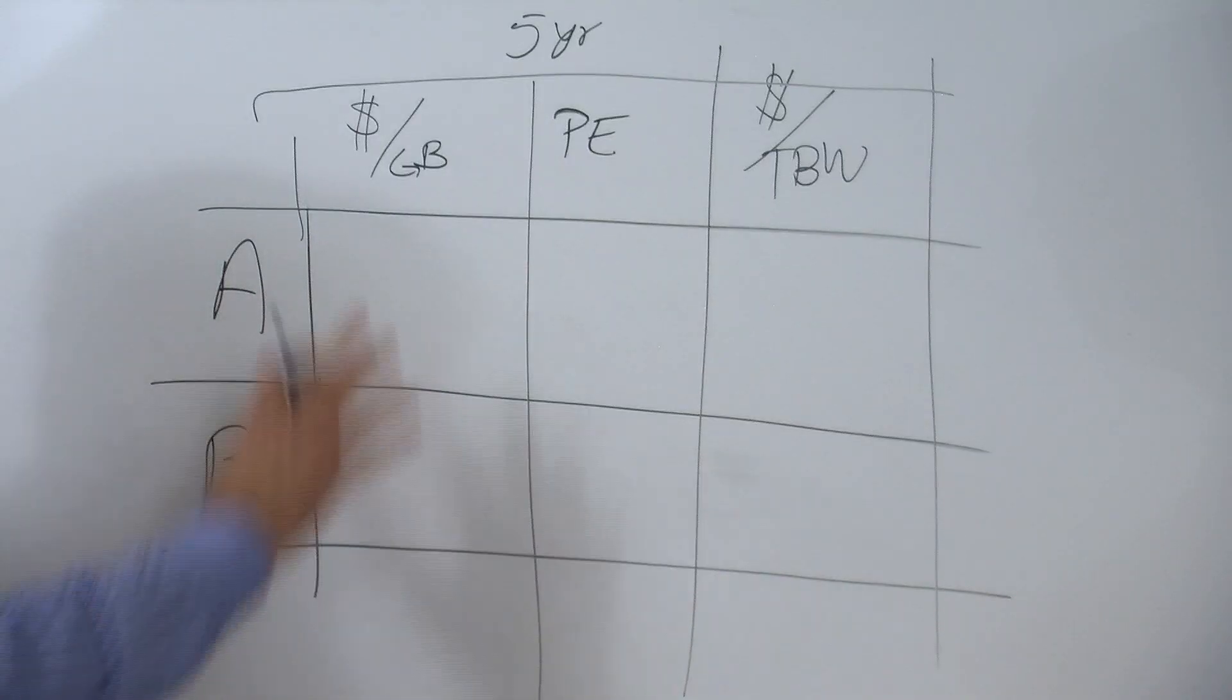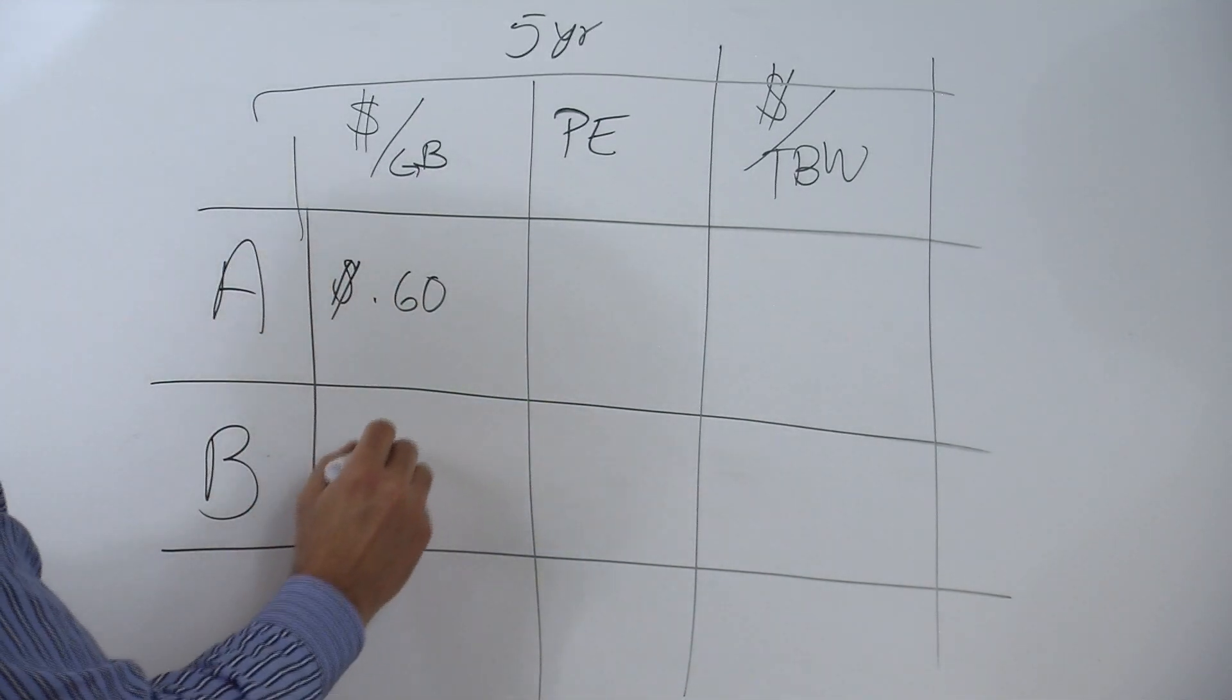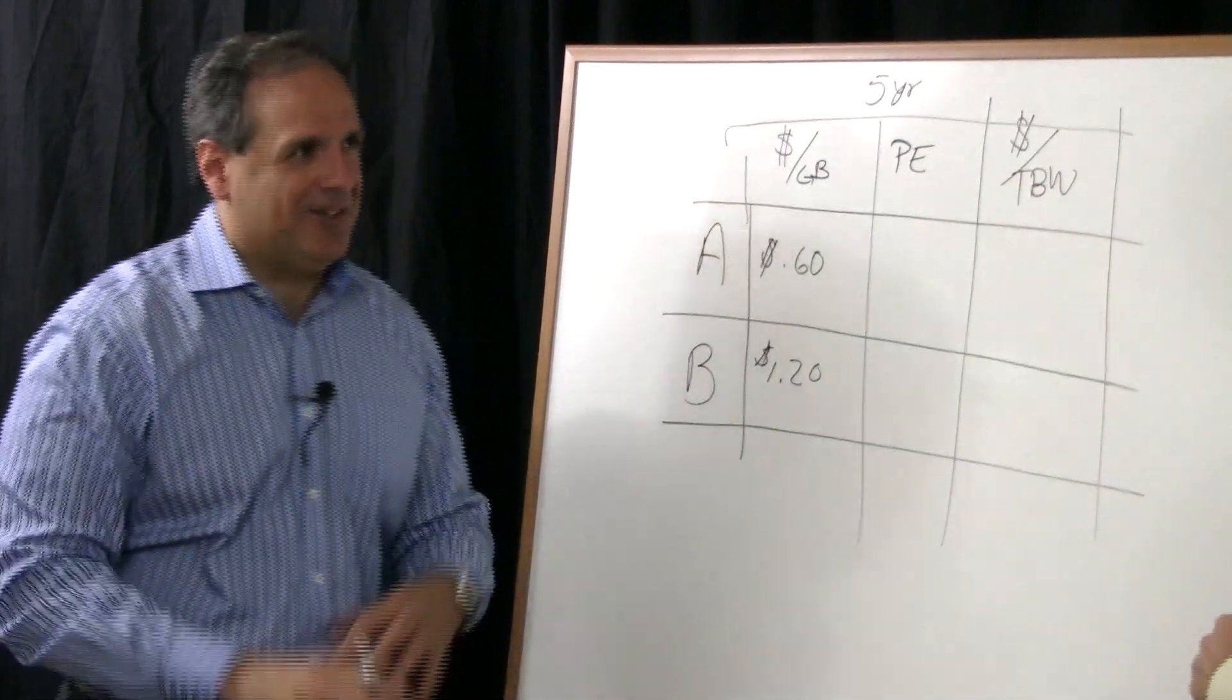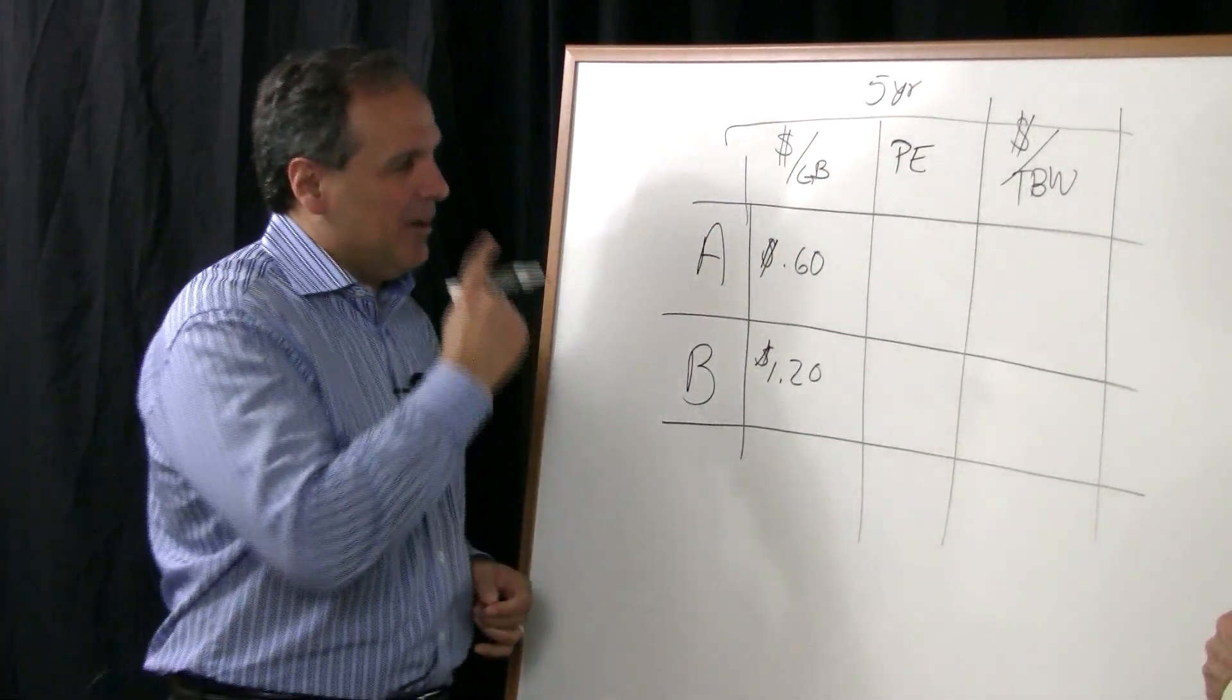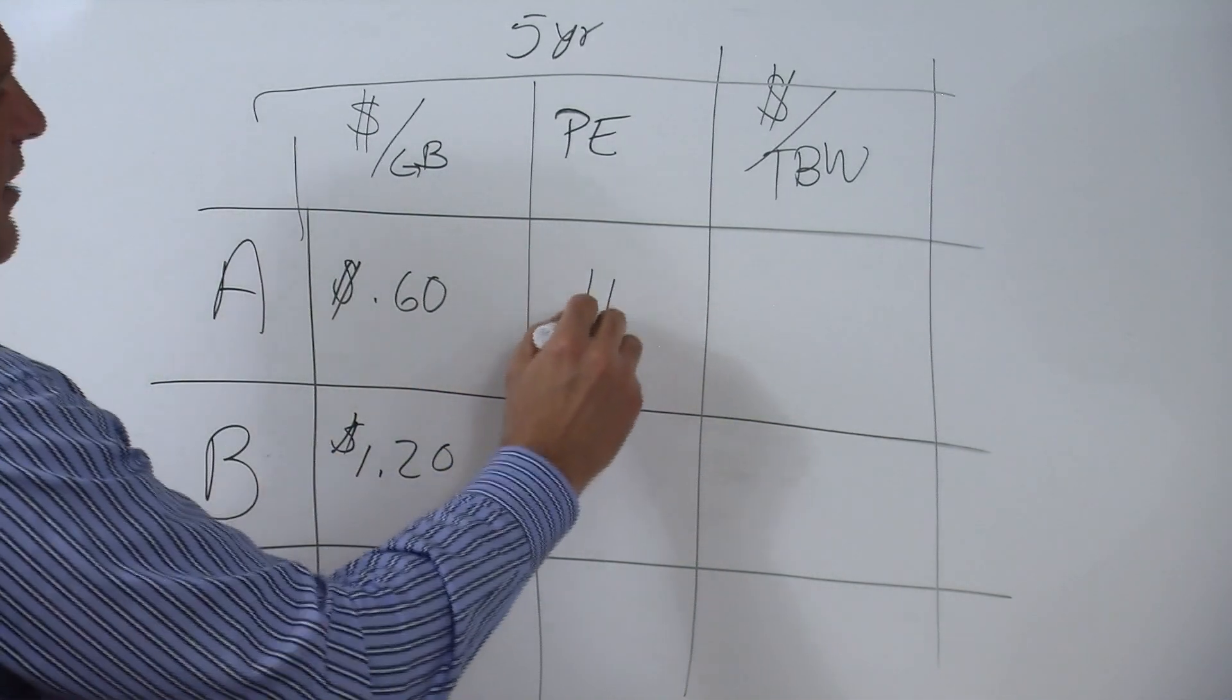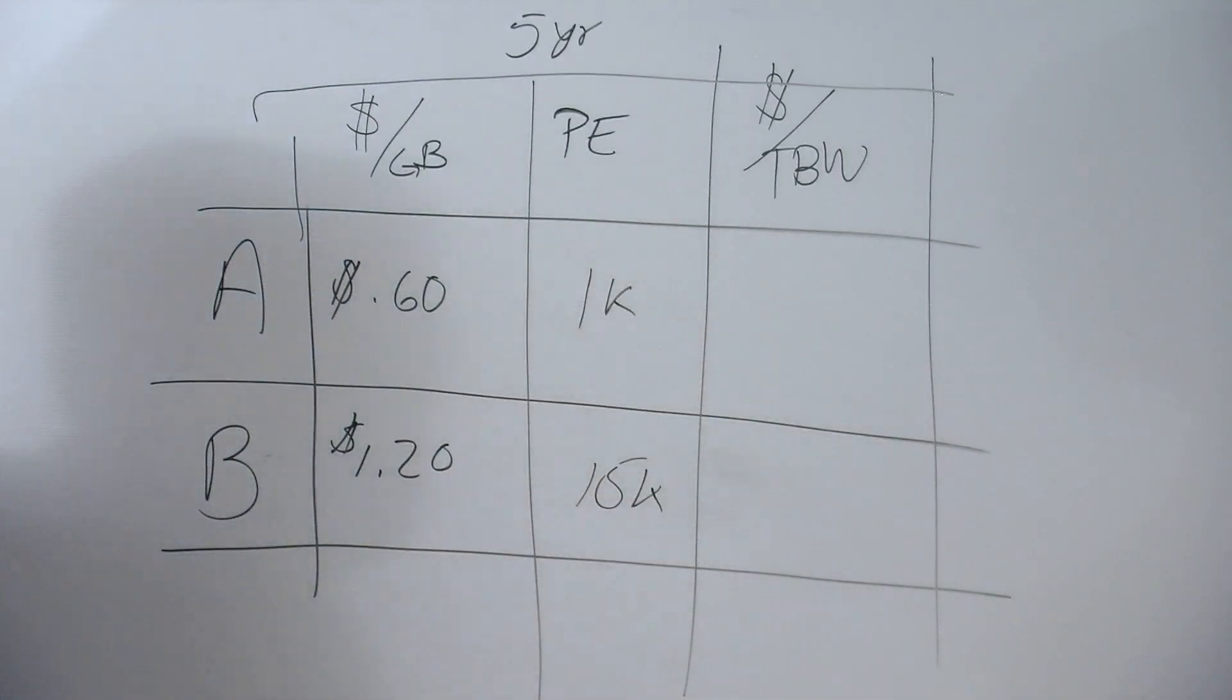Dollars per gigabyte. Drive A, 60 cents. Drive B, dollar 20. So now if you're in hard drive mode, you don't even look, you just buy it at 60 cents. You're done. This is not even a conversation. But if you look under the hood of these two drives, the PE cycles on the 60 cent drive is about a thousand. PE cycles on the dollar 20 drive are 15,000. It's a significant difference. One of the reasons why this is so low and expensive is because the flash can take so little cycles.